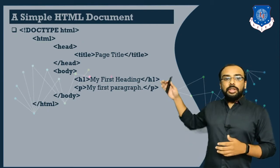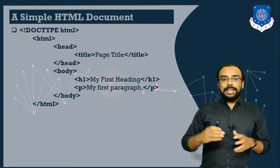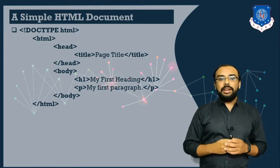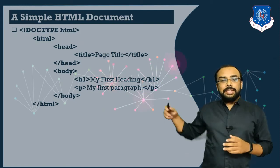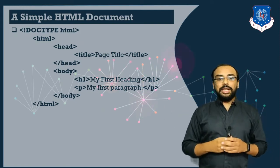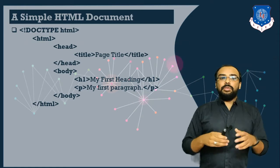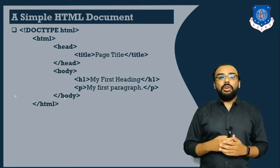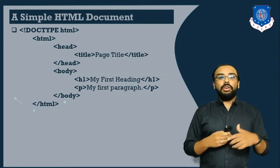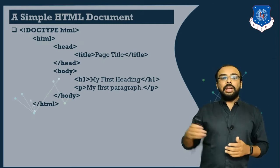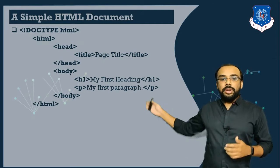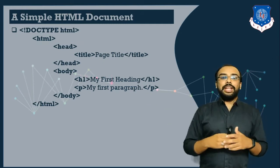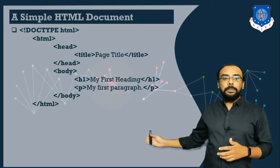The root tag is HTML. Inside this we have a tag known as head. Inside the head tag we have a tag known as title. This title will be displayed on the title bar of your browser. Then we have a body tag. Inside the body tag we have two different tags — h1 tag and p tag.